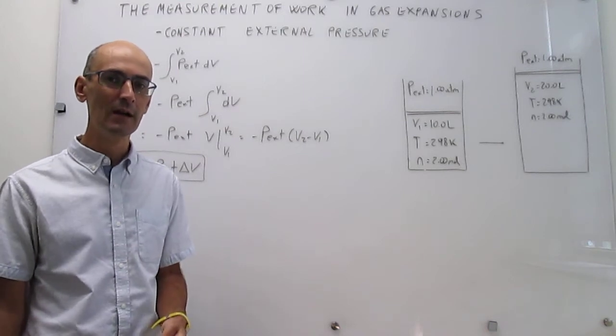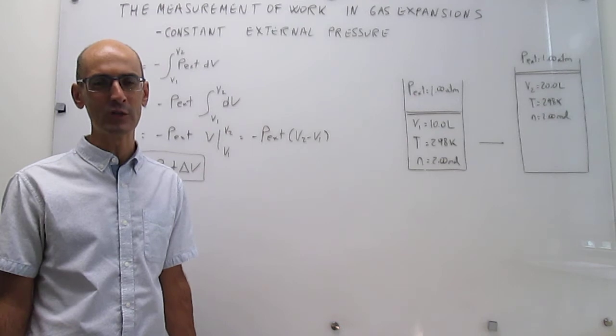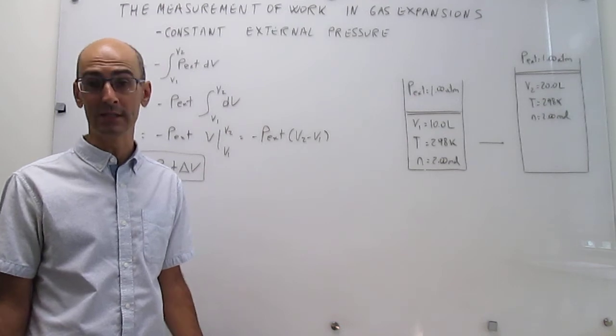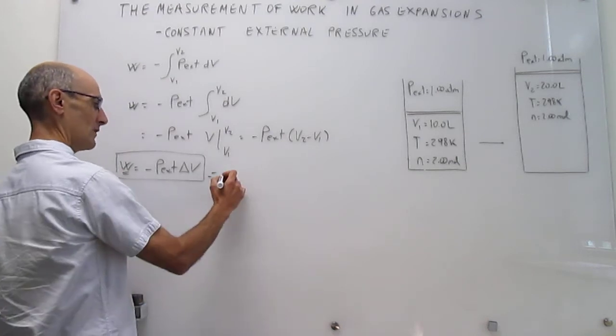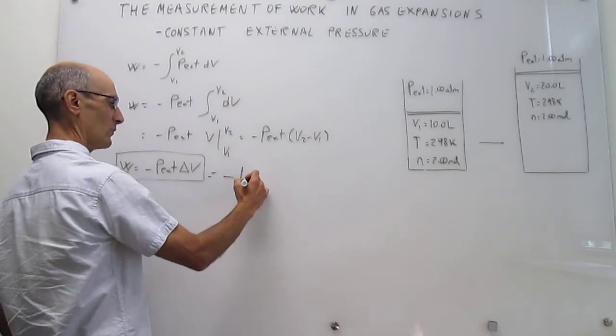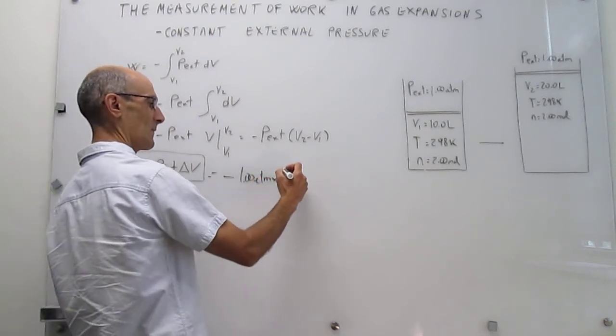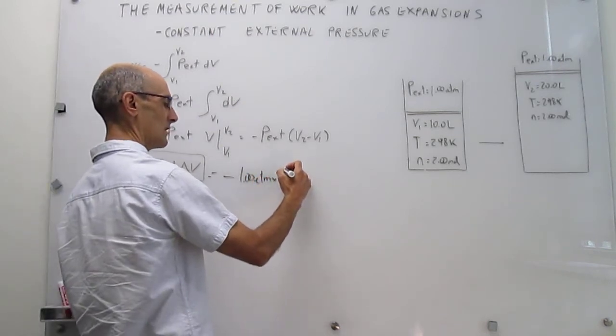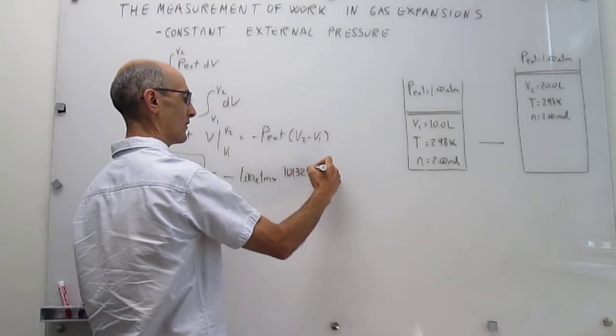So really the only challenge in this problem would be to make sure that we have the units in the SI system. So minus the external pressure, which is 1.00 ATM that we have to transform to Pascal, and the conversion factor is there's 101,325 Pascals for every ATM.